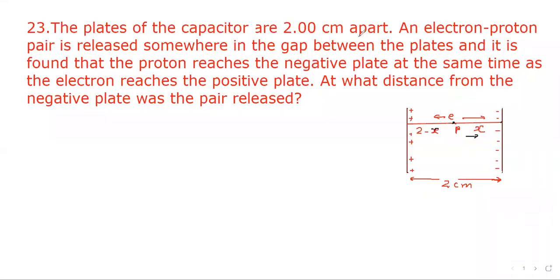The plates of the capacitor are 2 cm apart. An electron-proton pair is released somewhere in the gap between the plates and it is found that the proton reaches the negative plate at the same time as the electron reaches the positive plate. At what distance from the negative plate was the pair released?